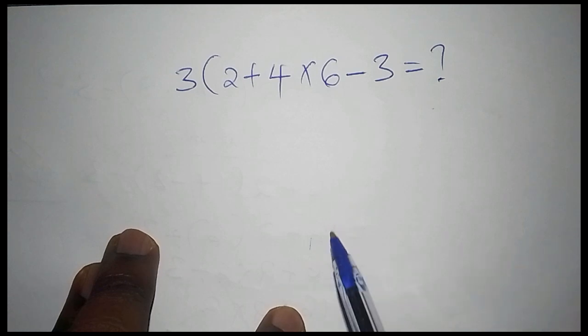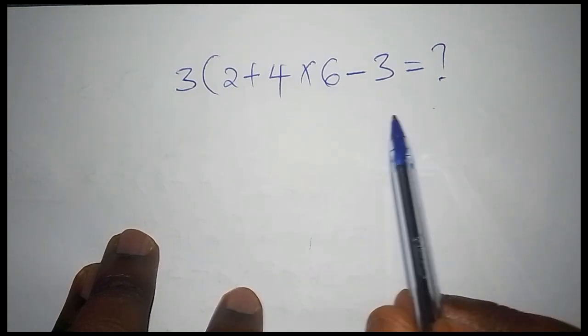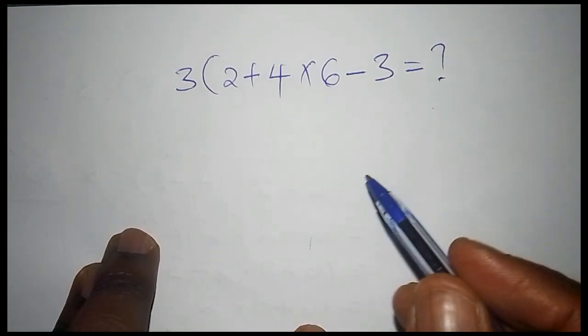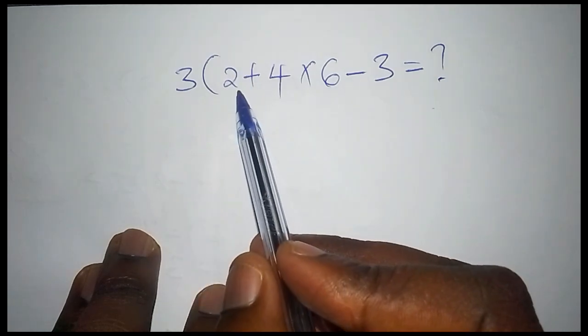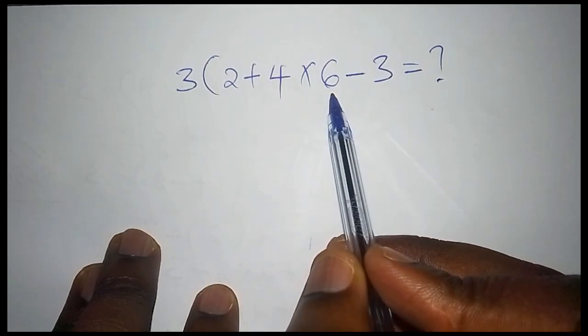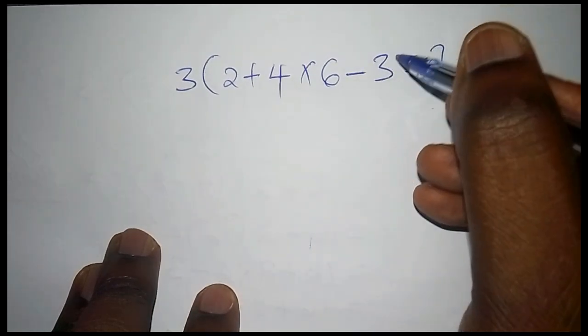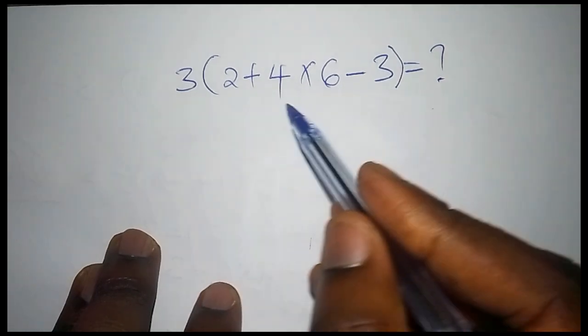Let's kick start! So we have 3 into bracket, 2 plus 4 multiply by 6 subtract from 3, then this one is into bracket. All of this is in the bracket, so don't make this mistake by working the number inside the bracket first without following the correct order.